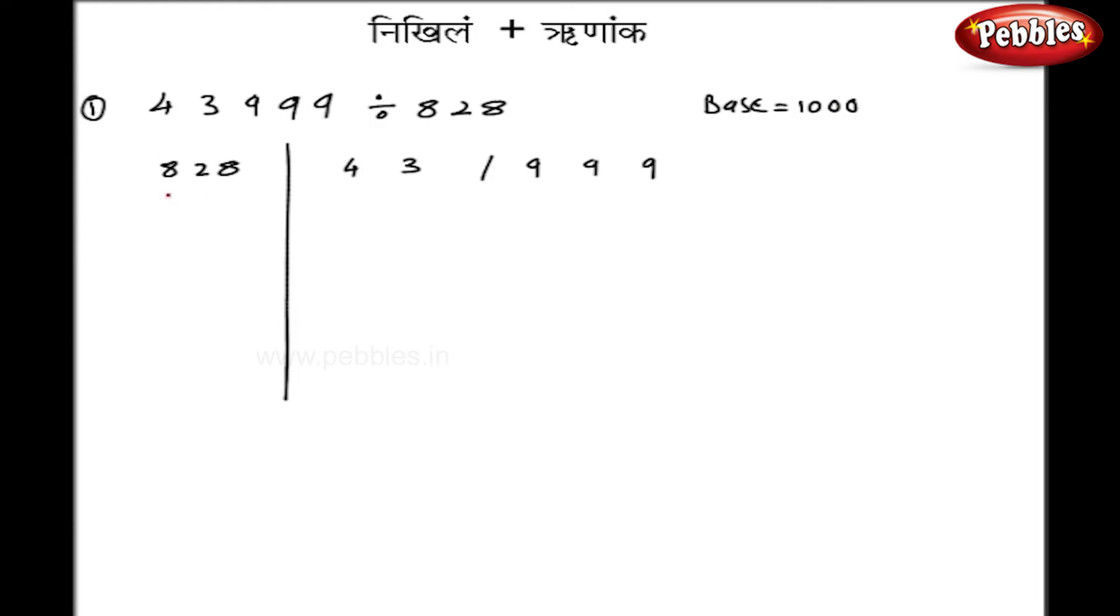Now in this case, my base is 1000. Subtracting 828, I get 172. But now we know that this 7 may create a problem for us by giving higher multiplications. So I will convert this 172 by Runanka method.